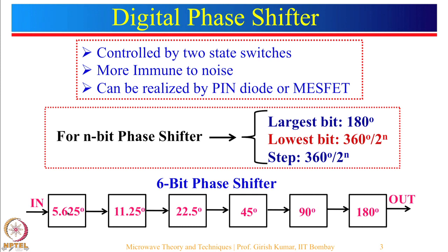In the 6-bit phase shifter, each bit is represented — bits 1 through 6. Depending upon which bit is 1, that will be the output phase shift. For example, if bit 1 only is 1 and the rest are all 0, the output will have a 180-degree phase shift. If the last bit is 1, the output will have only 5.625 degrees phase shift. If bit 3 only is 1, the output will have a phase shift of 45 degrees. If bits 3 and 4 are both 1 and the rest are 0, the output phase shift will be about 135 degrees.